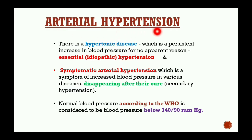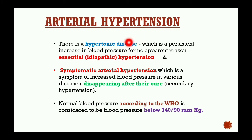In this video we will study arterial hypertension. We will cover it in two parts: the benign form and the malignant form. First, we will start with the general intro part. Arterial hypertension is a hypertonic disease.